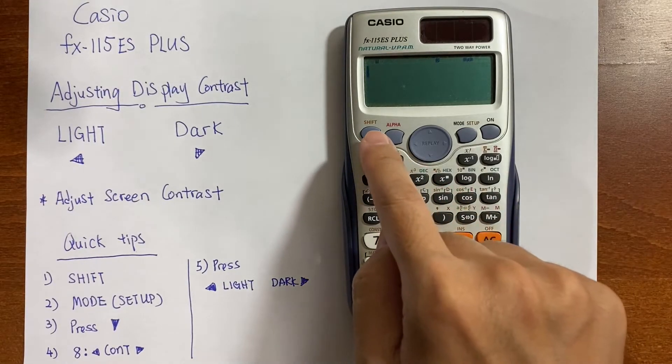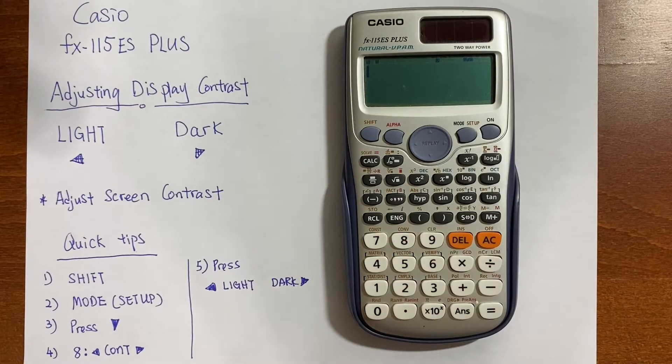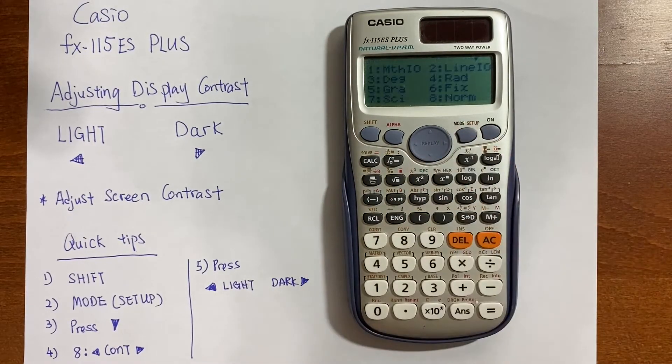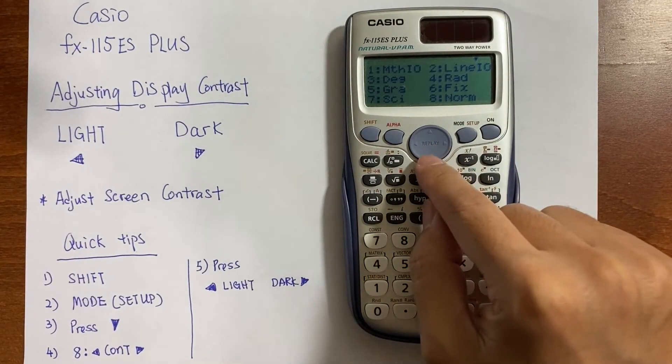First, press shift. Second, press mode. And then third, press the down key here.